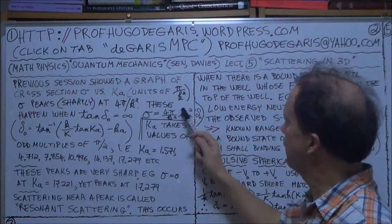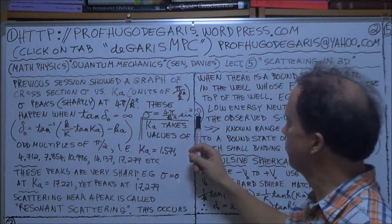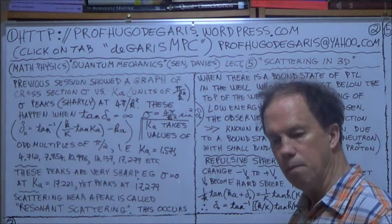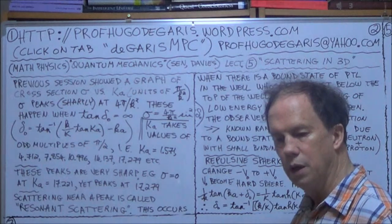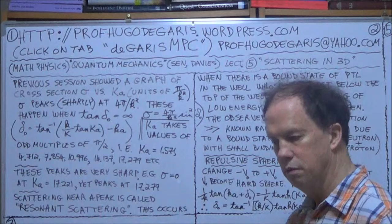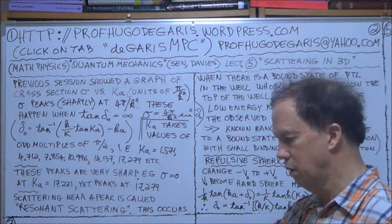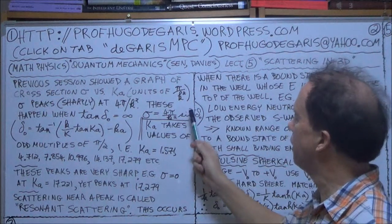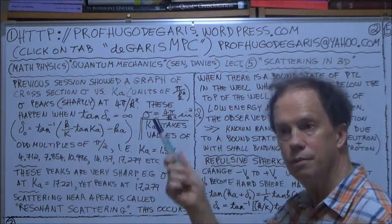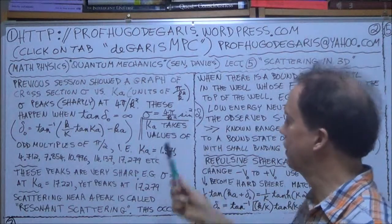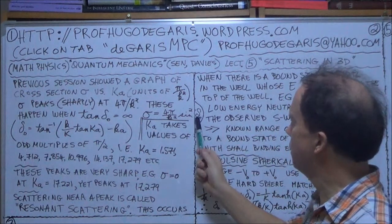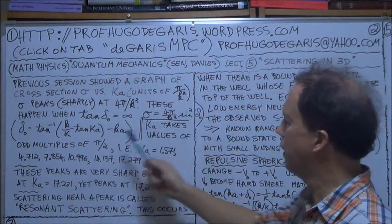So if sine is 1, your delta 0s here have to be pi over 2, multiples of pi over 2. And it's squared, so if it's minus 1, it doesn't matter because it's squared, plus 1. So you want your delta 0s to be multiples of pi over 2.